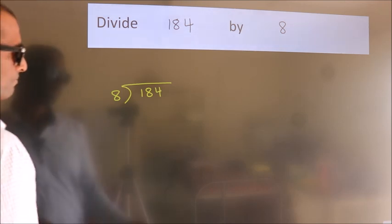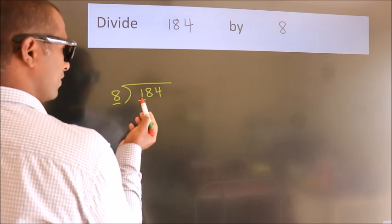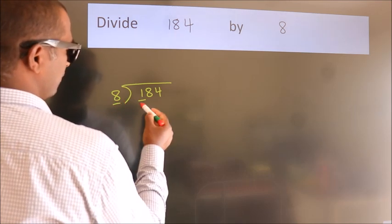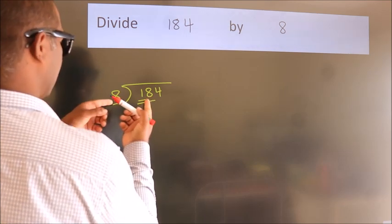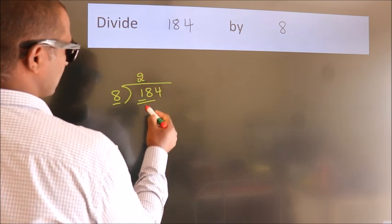Next. Here we have 1, here 8. 1 is smaller than 8, so we should take 2 numbers. 18. A number close to 18 in the 8 table is 8 times 2, 16.